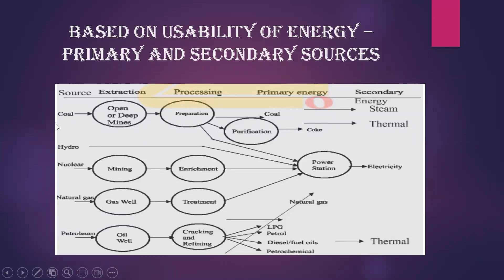Depending upon usability, there are numerous sources available — coal, hydro, nuclear, natural gas, and petroleum. These form the basic infrastructure from which we extract, process, and convert into energy. Coal is taken from deep mines, purified, and yields steam or thermal energy. Similarly, hydro, nuclear, and natural gases are taken from gas wells or mining, treated and enriched as required, and sent to power stations where they generate electricity.